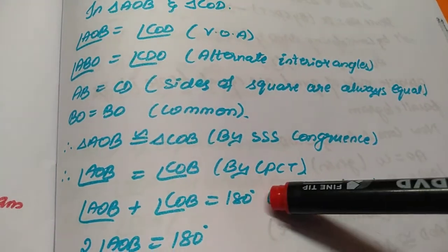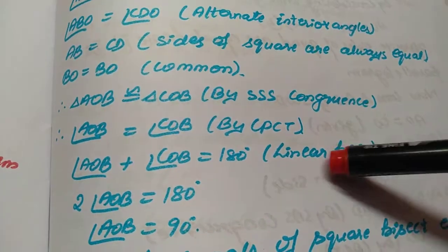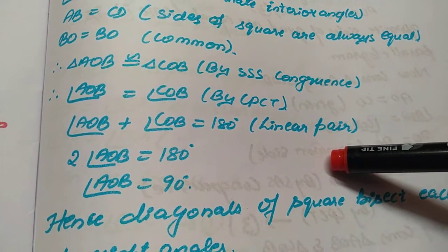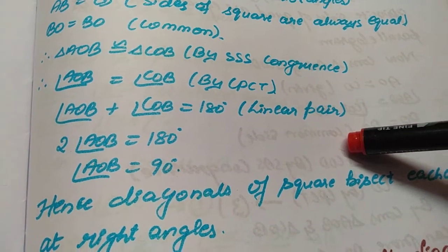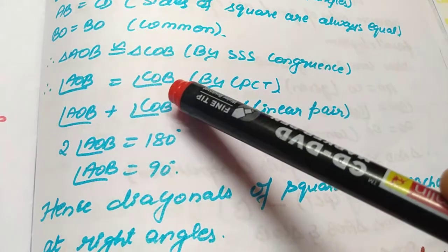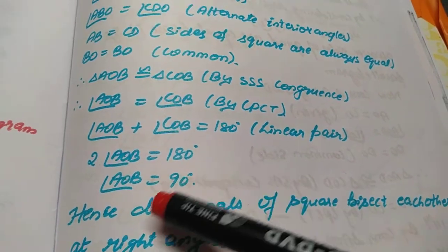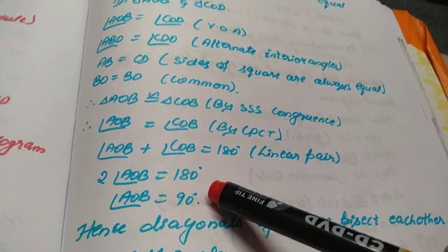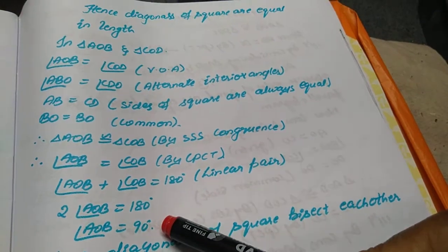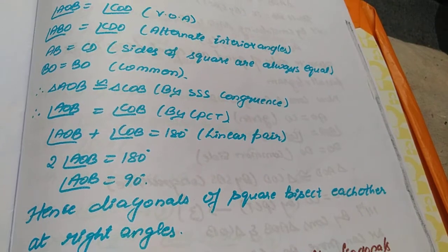Hence, by CPCT, angle AOB equal to angle COB. Now I will add angle AOB plus angle COB — it is 180 degrees because they form a linear pair. Since both angles are equal, I take one: two times angle AOB equal to 180 degrees. So angle AOB equals 90 degrees. Hence, the diagonals of the square bisect each other at right angles.